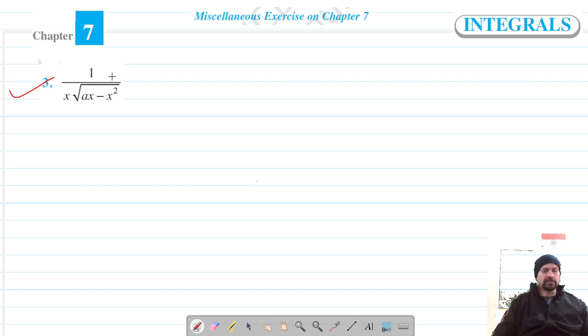Welcome to Kutum Science Academy classes, and we are on to question number three of miscellaneous exercise on chapter 7. Let's say our indefinite integral is I equals the integral of 1 over x times the square root of ax minus x squared dx.